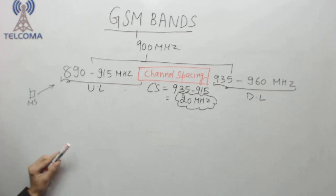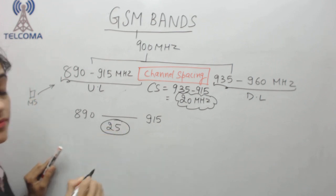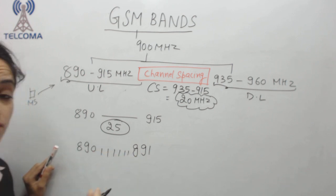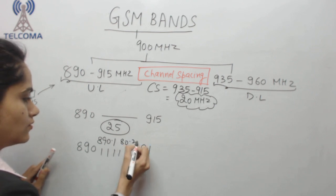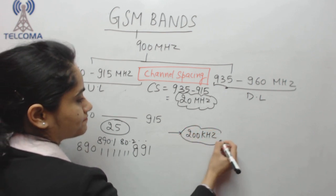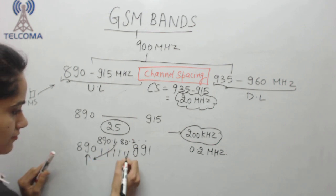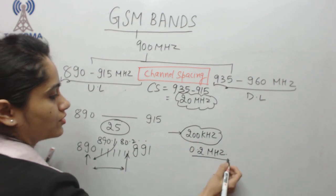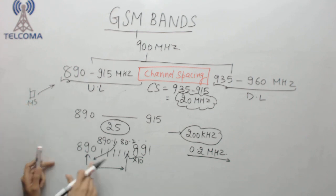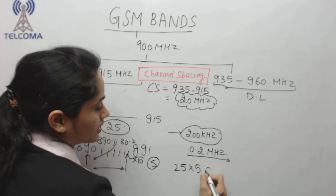Now let's calculate the total capacity of this band. From 890 to 915 megahertz we have 25 megahertz. Within FDMA, carriers are spaced 200 kilohertz (0.2 megahertz) apart. So from each 1 megahertz we get 10 divisions, but after leaving a spacing guard we are left with 5 usable carriers. So 25 multiplied by 5 gives us 125 channels.